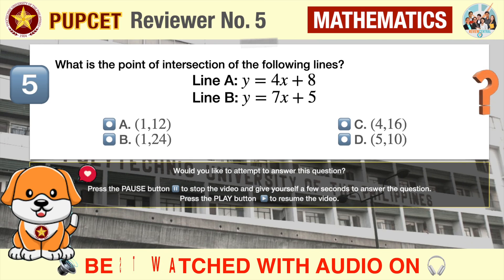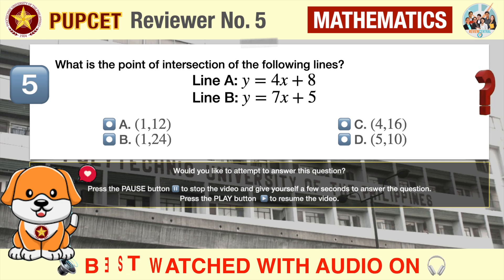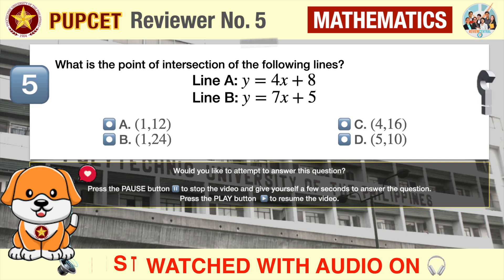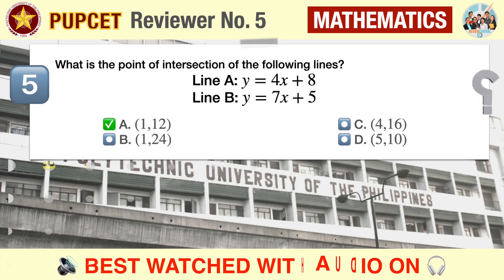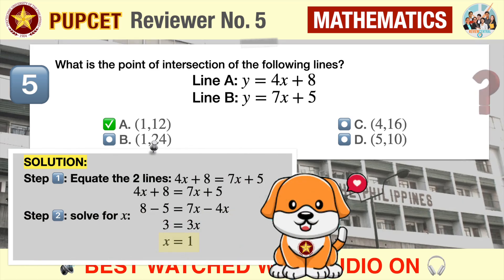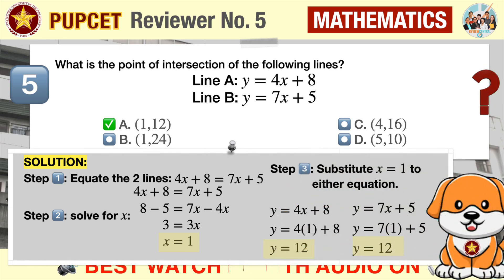Question number five: what is the point of intersection of the following lines? Line A: y = 4x + 8; Line B: y = 7x + 5. A) (1, 12), B) (1, 24), C) (4, 16), D) (5, 10). The correct answer is A: the point of intersection is x = 1 and y = 12. To find it, we set the equations equal to each other and solve for x, arriving at x = 1. Substituting into either equation gives y = 12.